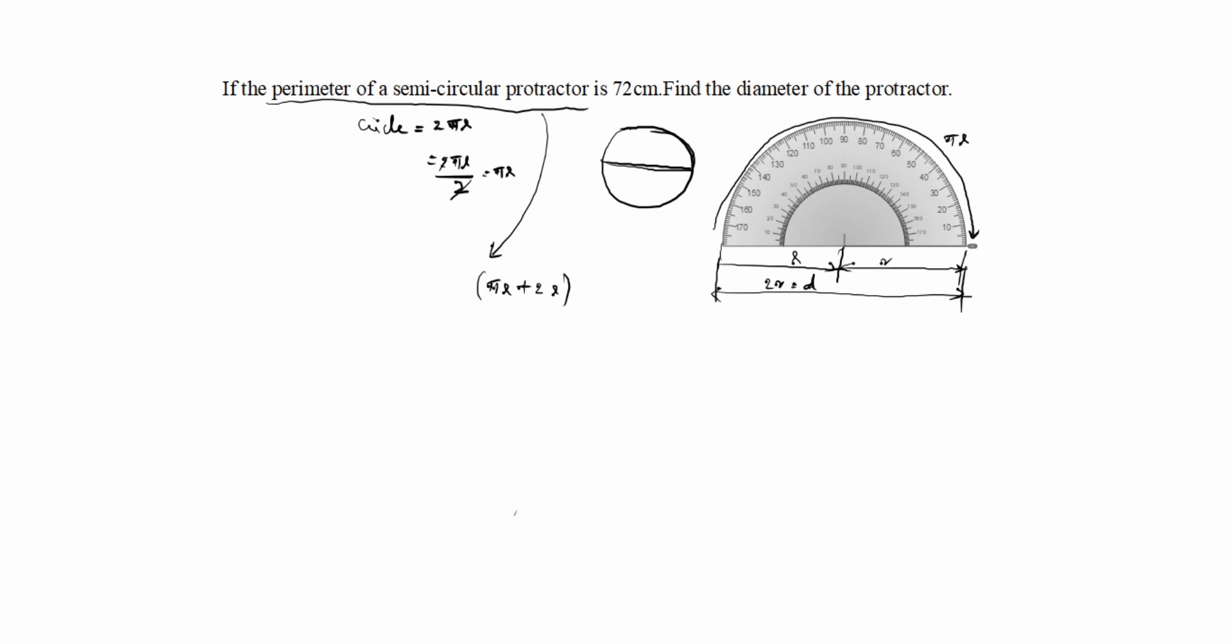So you have to write 72 centimeter. r is common. You can take it outside as (π + 2) equal to 72. What is π value in this case? 22 by 7 or 3.14. Now we will take 22 by 7 in this case plus 2. 72.